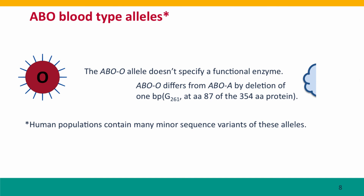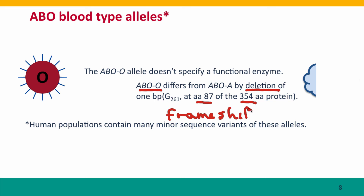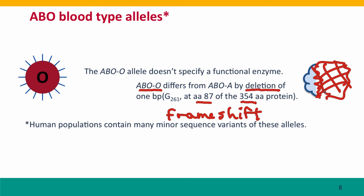So what about the O allele? The O allele doesn't specify any sugar modification at all, because it's a defective gene. The O allele differs from the A allele by a deletion of just one base pair. That base pair is in the codon that codes for amino acid 87 of a 354 amino acid protein — about a quarter of the way along. A one base pair deletion creates a frameshift. This mutation destroys the coding capacity of all the rest of the protein, and the cell produces a truncated non-functional protein, so no sugar modification is put on.